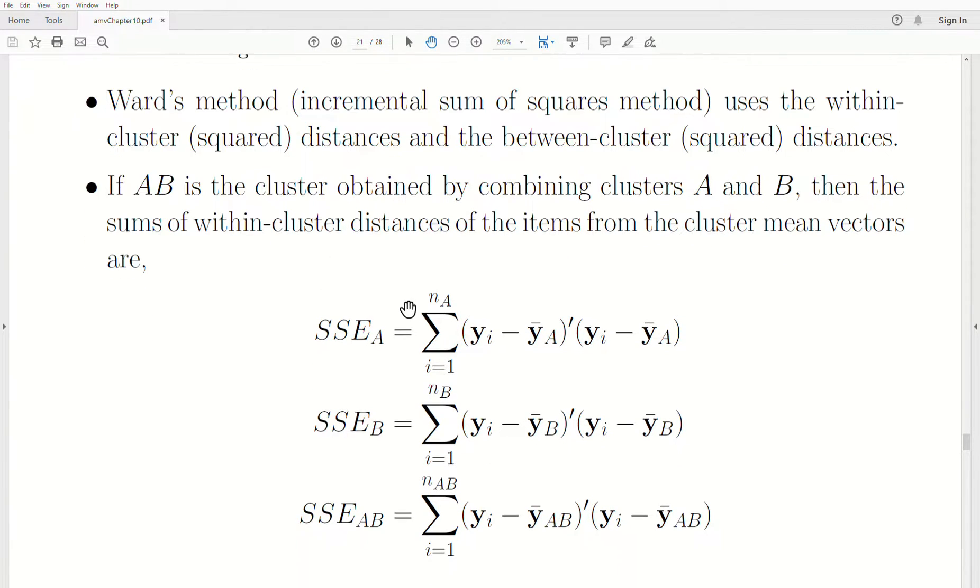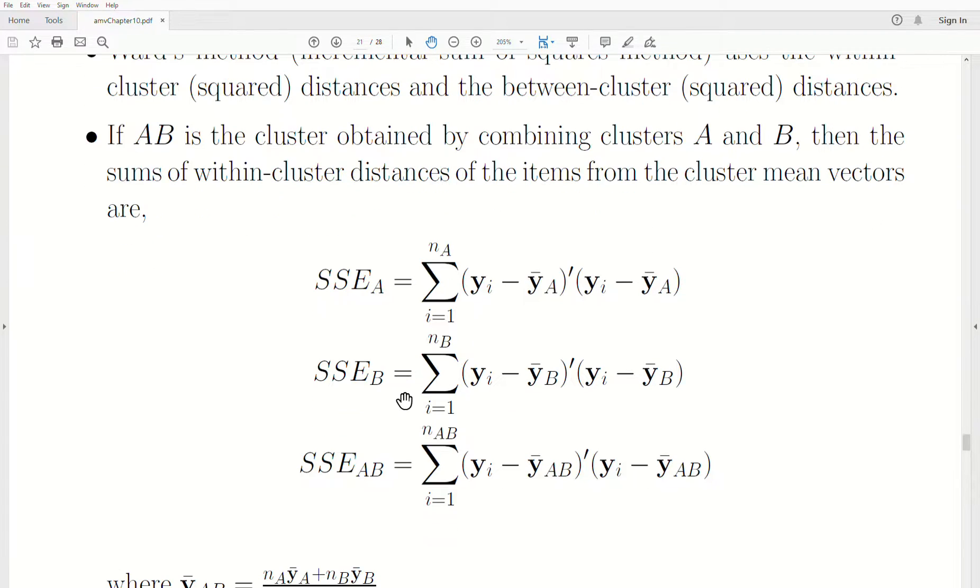If AB is the cluster obtained by combining clusters A and B, then the sum of within-cluster distances of the items from the cluster vectors are this.